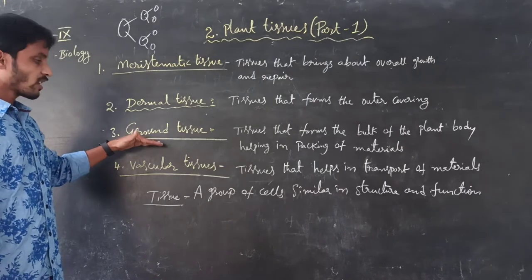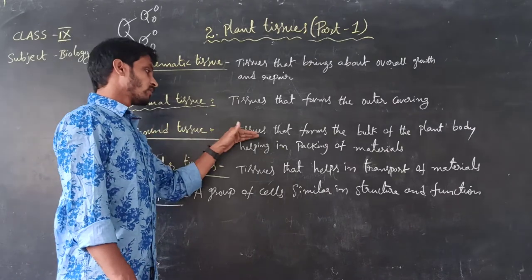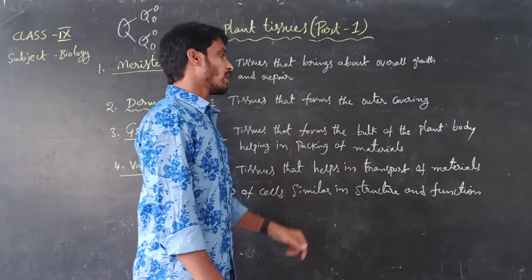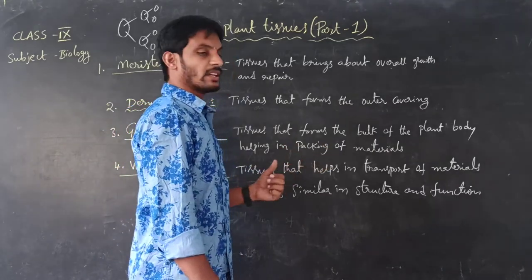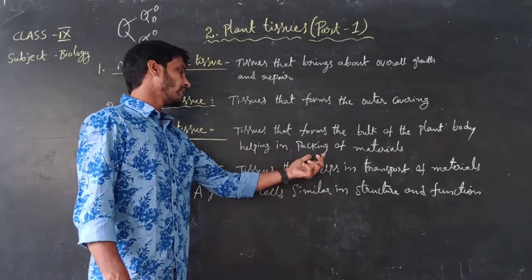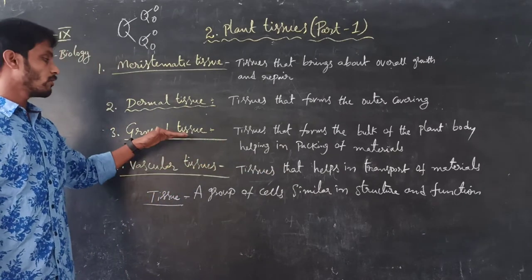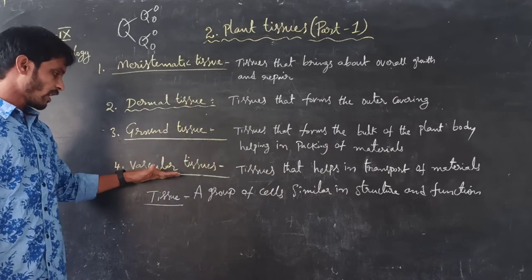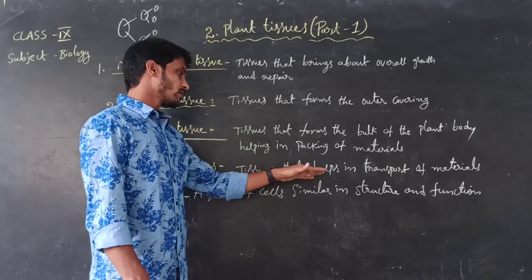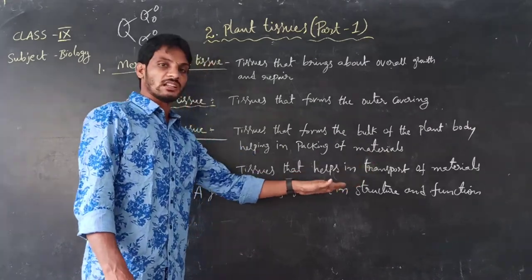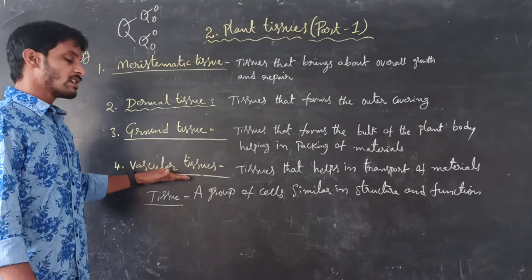Third, ground tissue — tissues that form the bulk of the plant body, helping in packing of materials, are called ground tissues. And the last one, vascular tissue — tissues that help in the transport of materials are called vascular tissues.